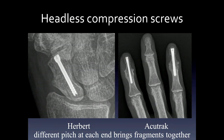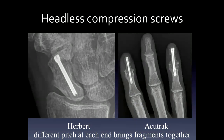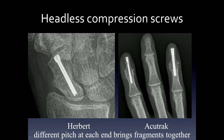Headless compression screws are shown in these two pictures. On the left is a Herbert screw — the threads proximally and distally are different: very close together proximally and far apart distally, allowing the fracture fragments to come together when this screw is inserted. Notice that the heads of the screws are buried so that the joints adjacent to them are not affected. The screw on the right has a variable changing pitch, which produces a similar effect to bring the fracture or fusion site together.